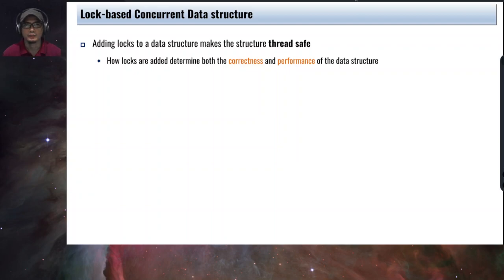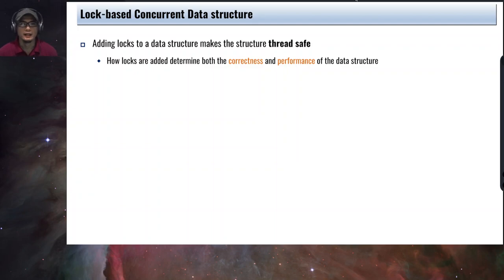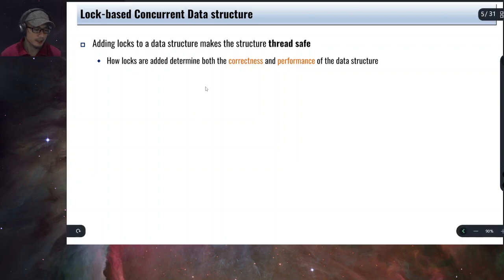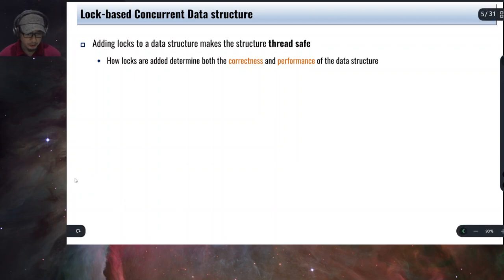For example, in the case of Java, the Vector class is a thread-safe data structure compared to the plain linked list. So the basic idea is to add locks on the critical sections of the implementation of the data structures. Now how these locks are added will actually determine both the correctness and the performance of the data structure. So it's important that we pay attention to the placement of how the locks are added in the implementation of the data structure.